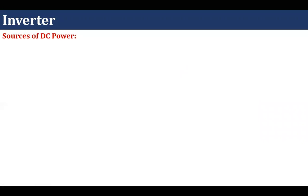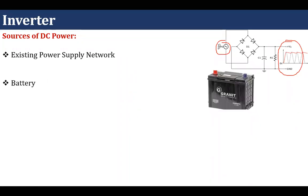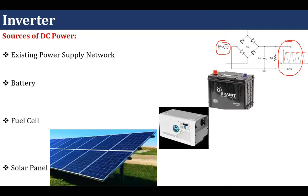Now we will talk about sources of DC power. The first source we can consider is the existing power supply network, which is in the form of AC — we can convert that AC into DC with the help of a rectifier. The second one is a battery, from which we can get DC power. The third one is a fuel cell, which takes input as natural gas or other gases and produces electrical power in the form of DC. Similarly, a solar panel also generates DC power, converting solar energy into electrical energy, and this electrical energy is in the form of DC.